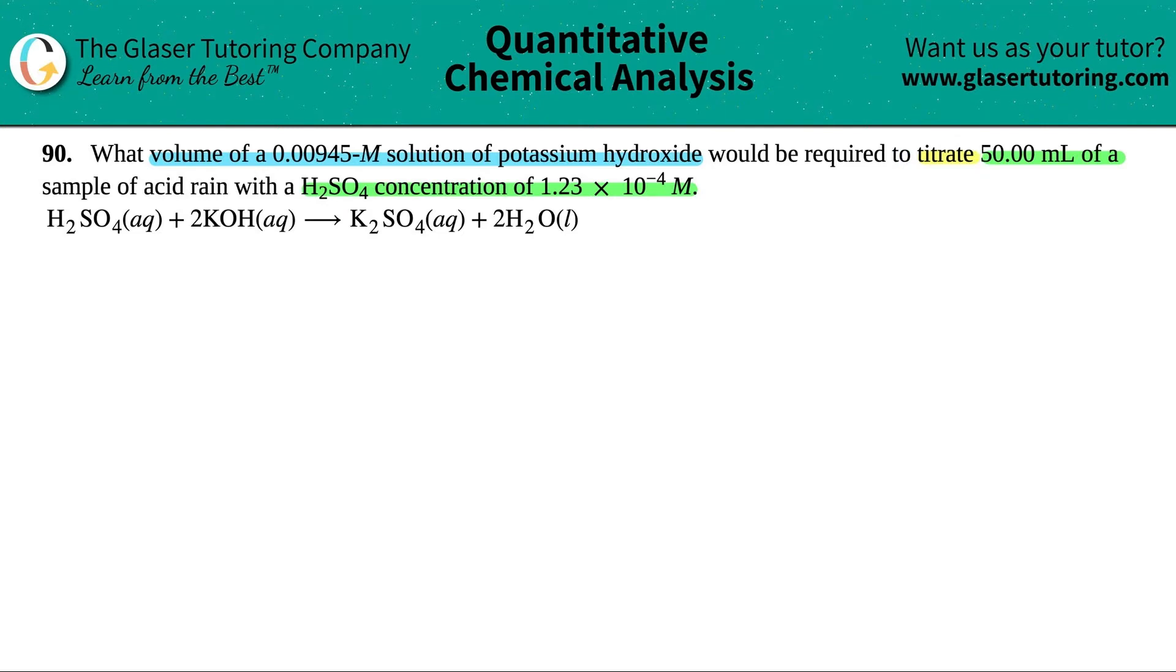And in this case, we have potassium hydroxide, and we've done tons of acid and base work. We know our strong acids, we know our strong bases, and potassium hydroxide is a strong base. Potassium hydroxide is KOH, it's this guy over here. And H2SO4, that's on our list of strong acids. So we have a strong base and a strong acid.